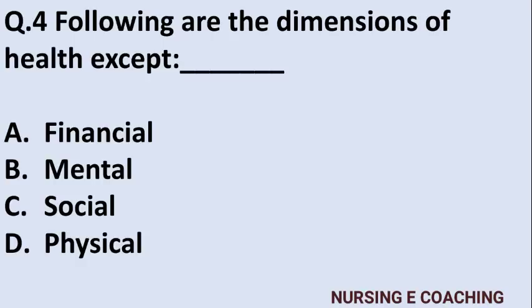Question 4: Following are the dimensions of health except — which one is not a dimension of health? Option A: financial, Option B: mental, Option C: social, Option D: physical. Answer is Option A — financial. Financial is not a health dimension.